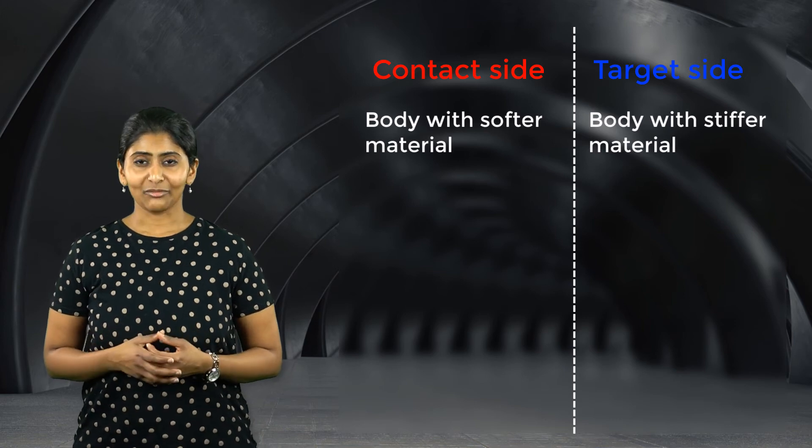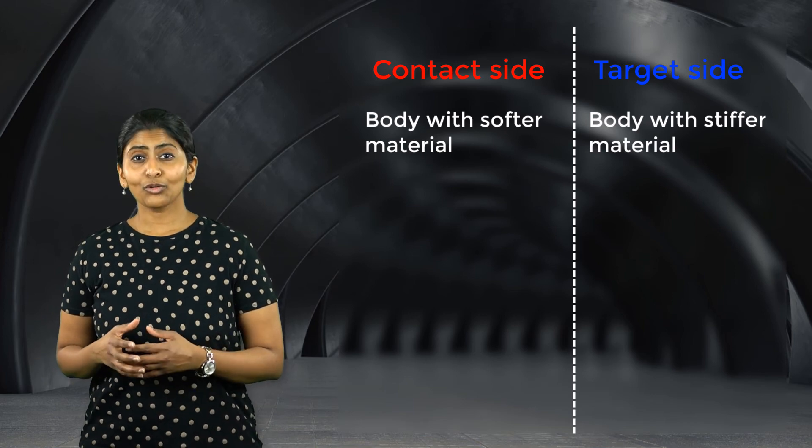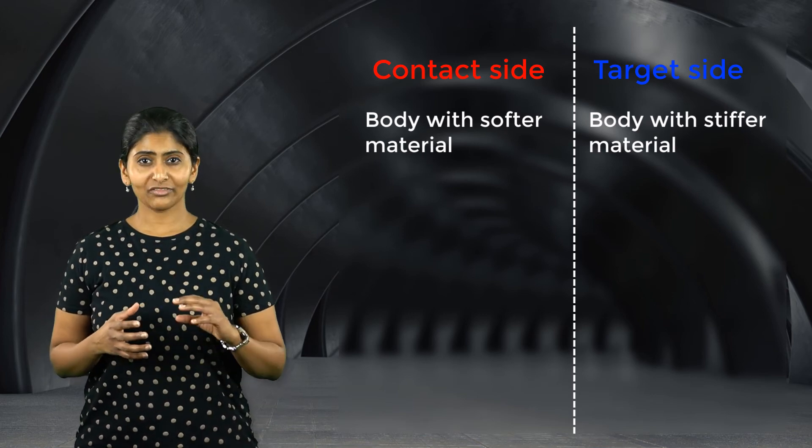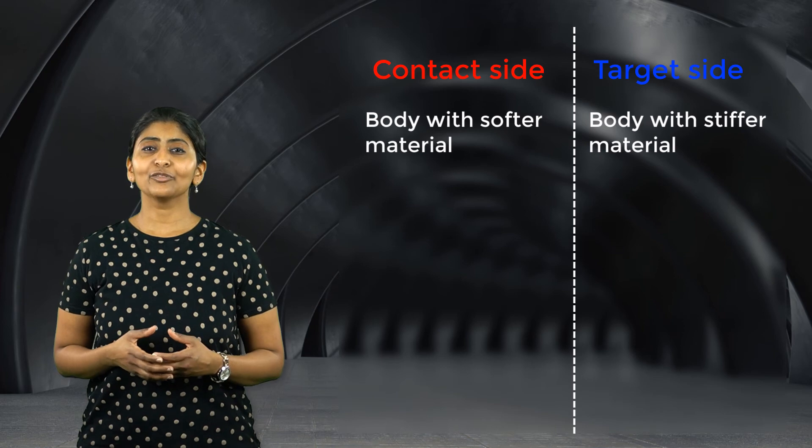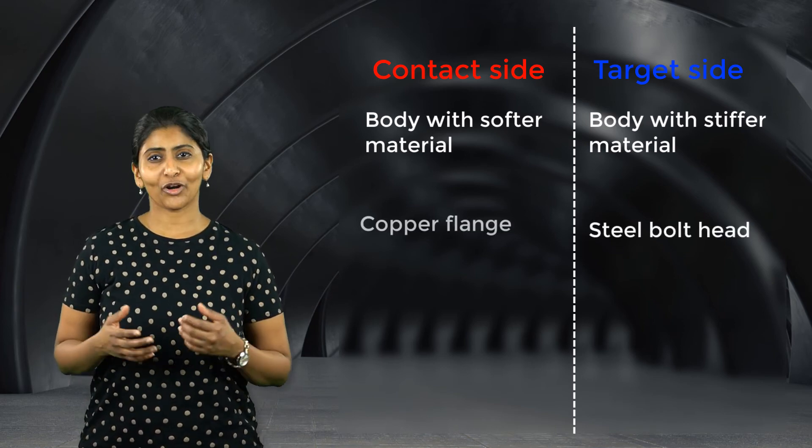For example, copper is softer than steel. So, if steel bolts are used to connect copper flanges, the bolt head will be the target side and the copper flange will be the contact side.